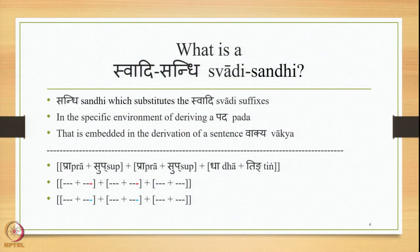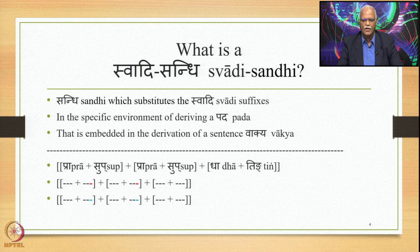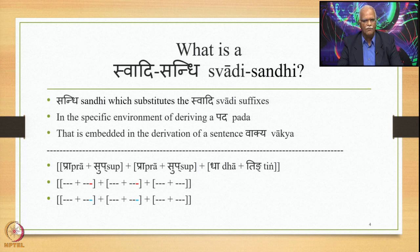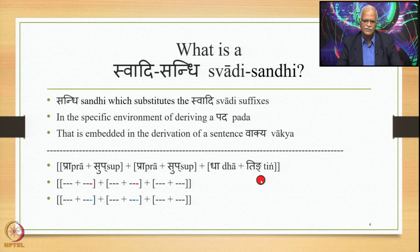What is a Swadhi-Sandhi? Swadhi-Sandhi is a Sandhi which substitutes the Swadhi suffixes. This substitution takes place in a specific environment of deriving a Pada that is embedded in the derivation of a sentence or Vaakya. In accordance with the definition of a Vaakya, Ekating Vaakyam, there has to be one Ting, which means a Pada consisting of Prakriti and Pratyaya. There should be at least one Pada with a Ting Pratyaya with the Prakriti in the form of Dhatu. The Vaakya should have Pratipadika plus Sub as one Pada, Pratipadika plus Sub as another Pada, and Dhatu plus Ting as the third Pada.